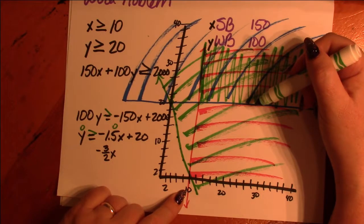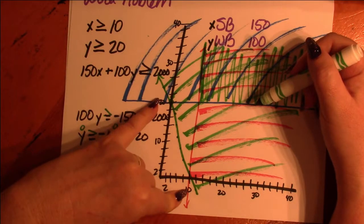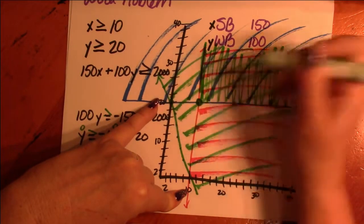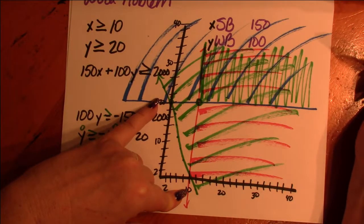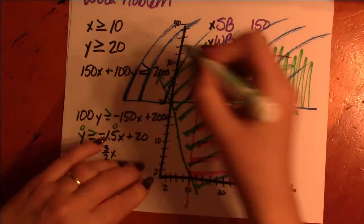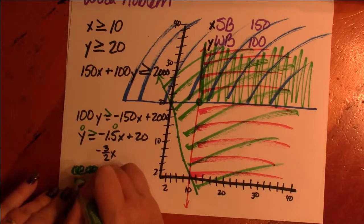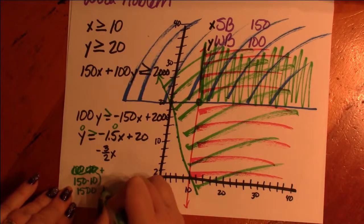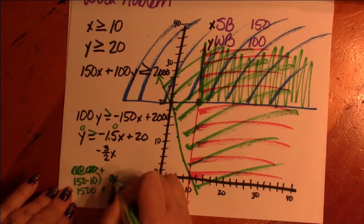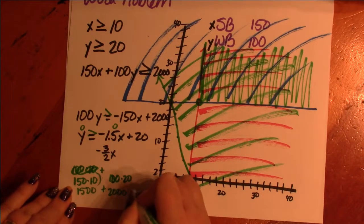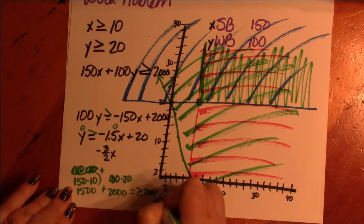So we know that X has to equal at least 10 and Y has to equal at least 20. What if we just did that? If X is 10 and Y is 20, we're right there. Do we hit 2,000? These are all solid lines. So we should. So if we had 150 times 10, which is 1,500, plus 100 times 20, which is 2,000, yes. We will make more than our $2,000.